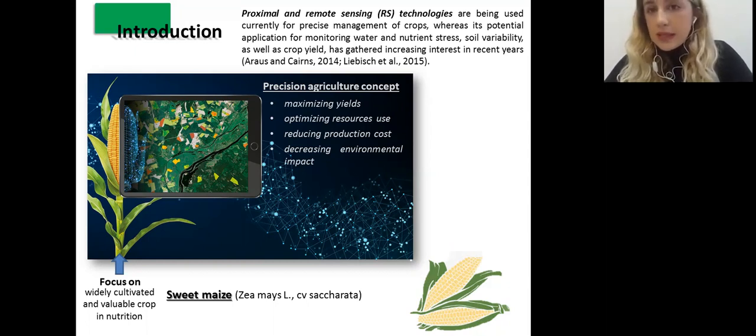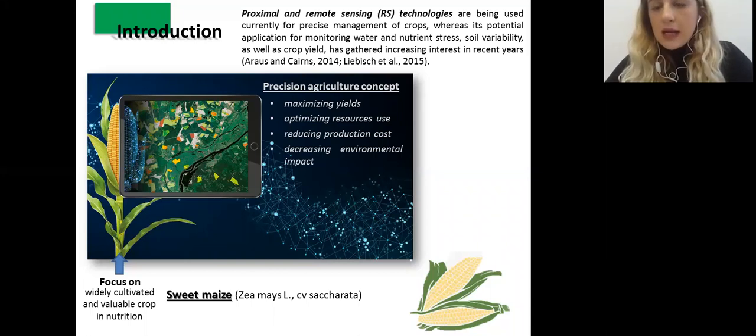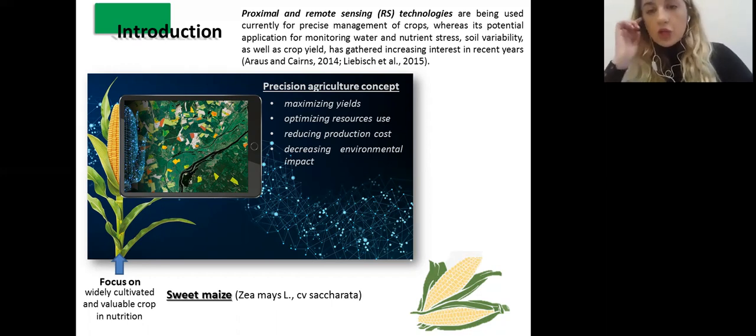Also, proximal and remote sensing technologies are a very great tool, and they are being used currently for precise management of crops, with very nice potential for application in monitoring water and nutrient stress, soil variability, prediction of crop yield, nutrition, deficit of nutrition, and water stress. Also, in our experiment, we had focus on sweet maize that is considered as widely cultivated and valuable crop in nutrition.